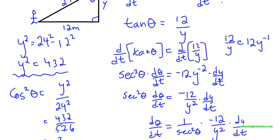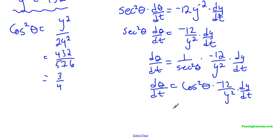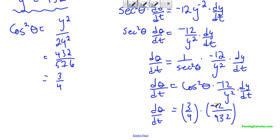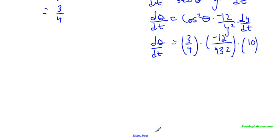So now we got everything we need. All I need to do is plug everything in. So my dy over dt is 10. So my d theta over dt, so I got 3 over 4 times negative 12 over 432. For some reason I cannot write negative 12. Here we go. Negative 12. And then this guy's 10. So we just got to do the math on this. Now if you were in a non-calculator situation, you'd have to really get creative with this question. But I'm not, so I can sort of cheat a little bit.